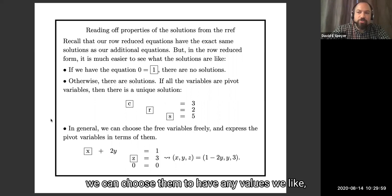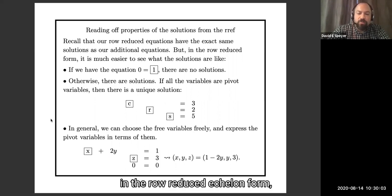We could choose them to have any values we like, and then it's easy in the row reduced echelon form to read off the values of the pivot variables in terms of the free variables. So if y is anything we like here, then x will be 1 minus 2y, and z will be 3.